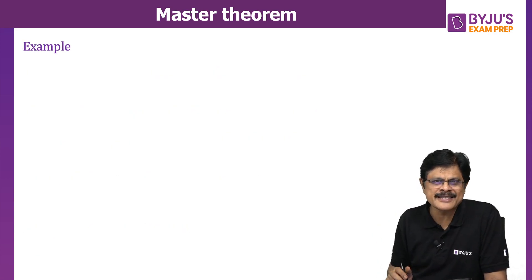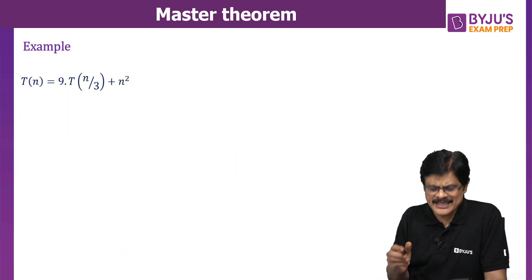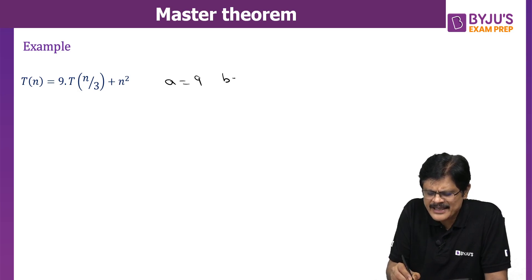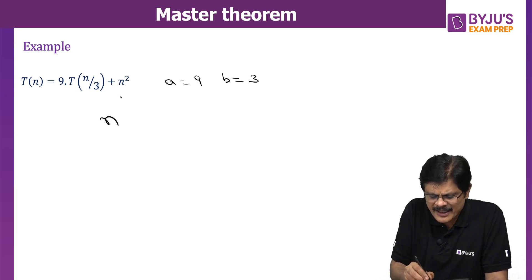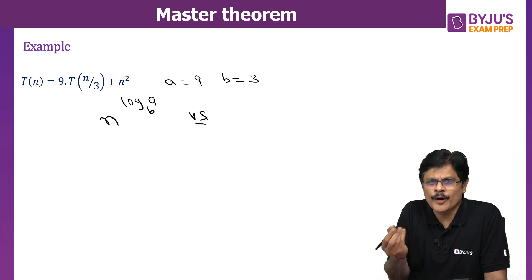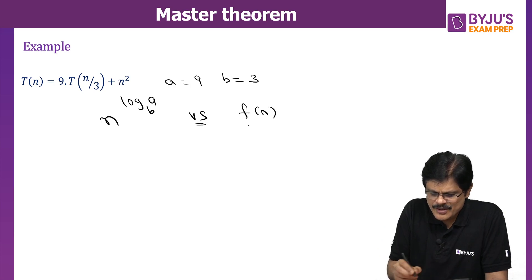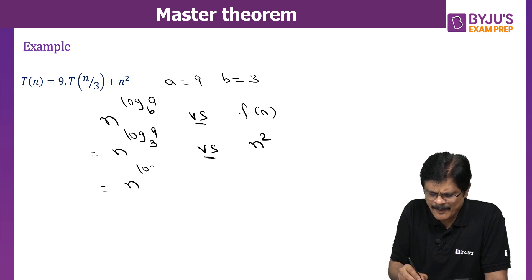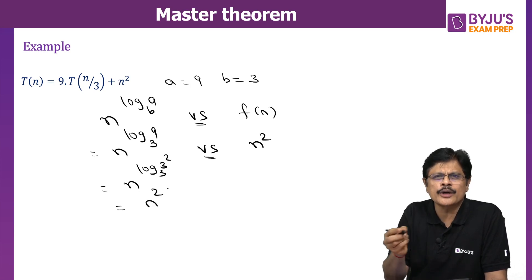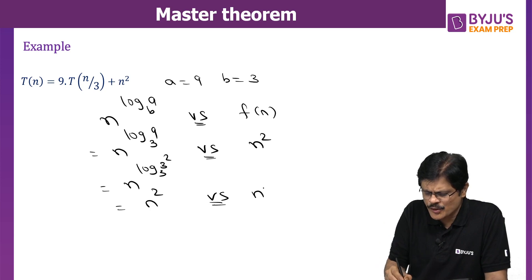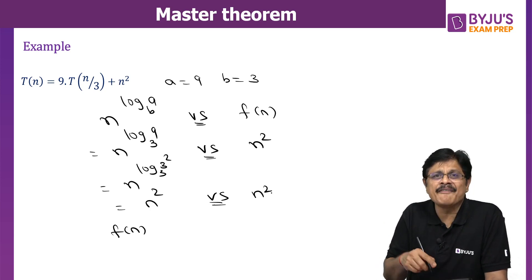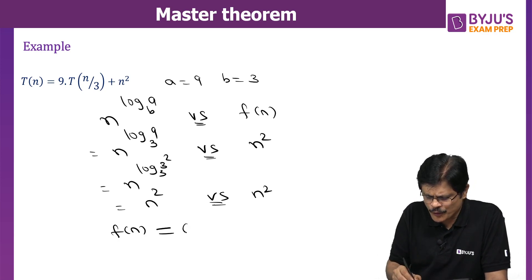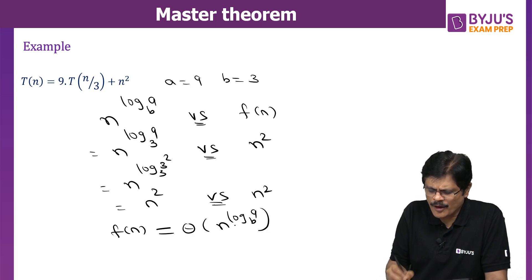Let us see a simple example for Case 2: T(n) = 9·T(n/3) + N². Here A = 9 and B = 3. Again, the match is n^(log_B A) versus F(n), that is n^(log_3 9) versus N². Simplifying: log_3 9 = log_3 3² = 2, so n^(log_3 9) = N². The right-hand side F(n) is also N². So both are N², meaning they have the same order of growth.